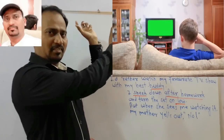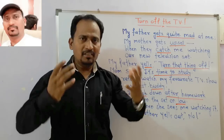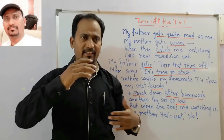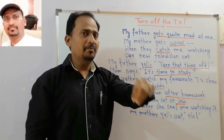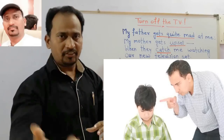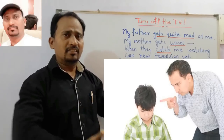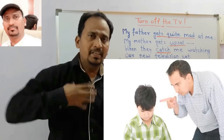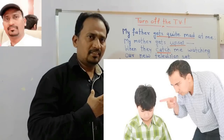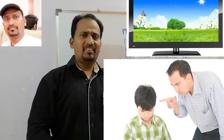The narrator is the boy, and he says: 'My father gets quite mad at me' — gets quite mad means my father gets so angry. 'My mother gets upset' — upset means disappointed. And in that angry mood, my father yelled — screamed — 'Turn that thing off.' Means shut down that TV, turn off the TV. It's his angry mood.